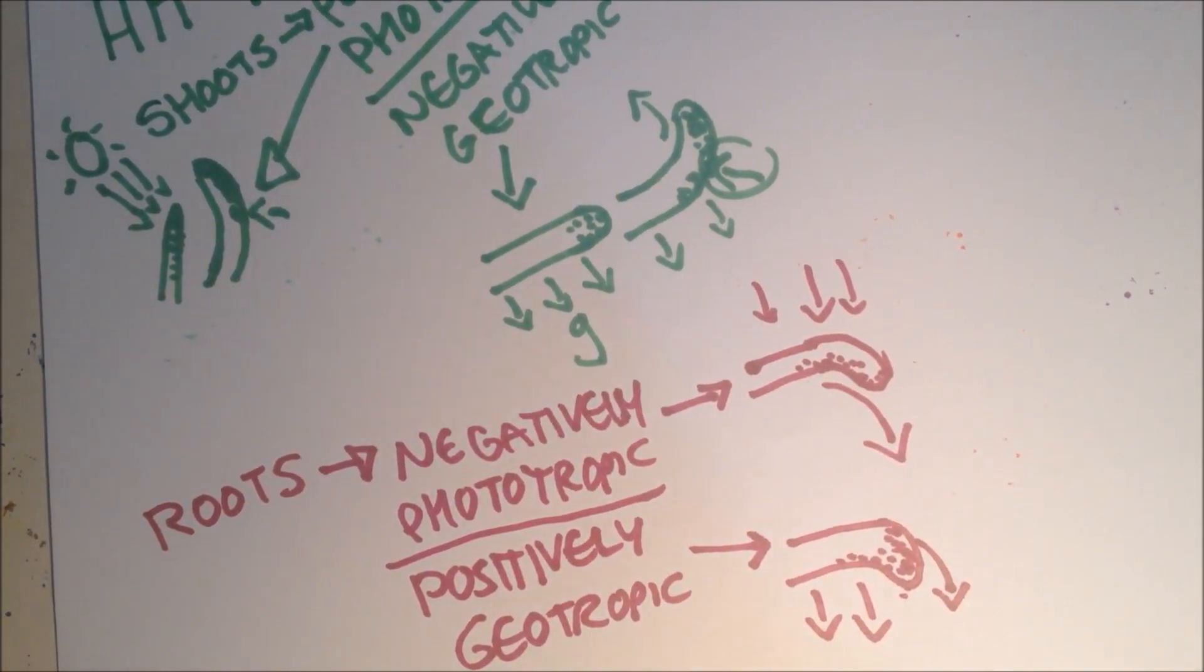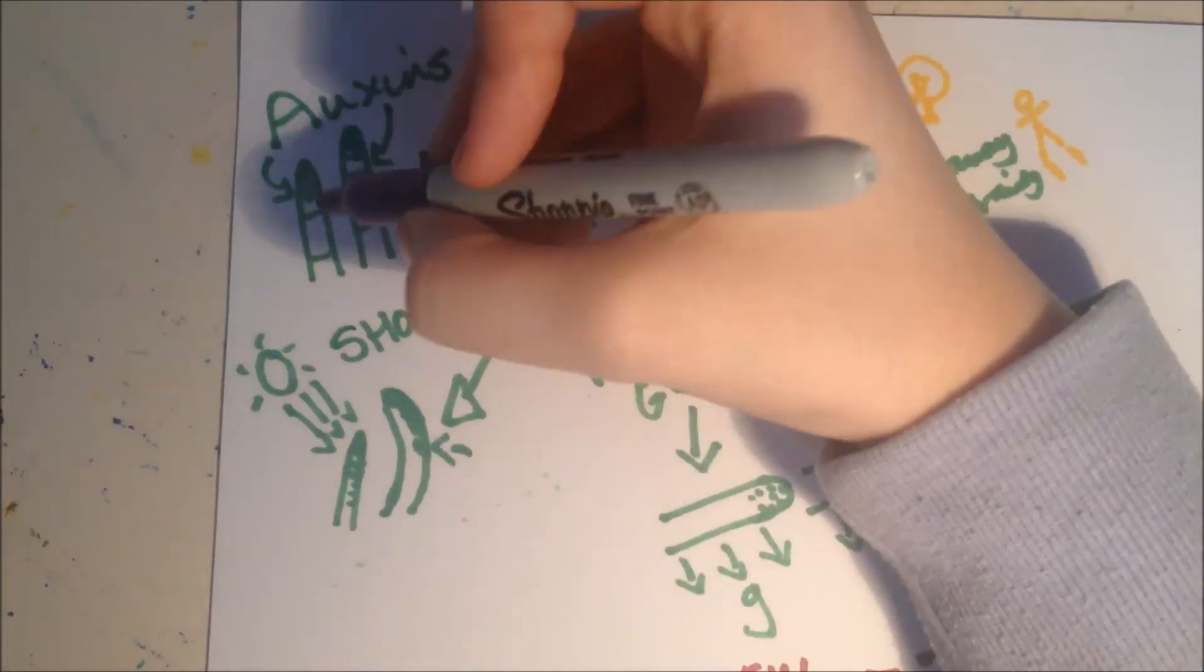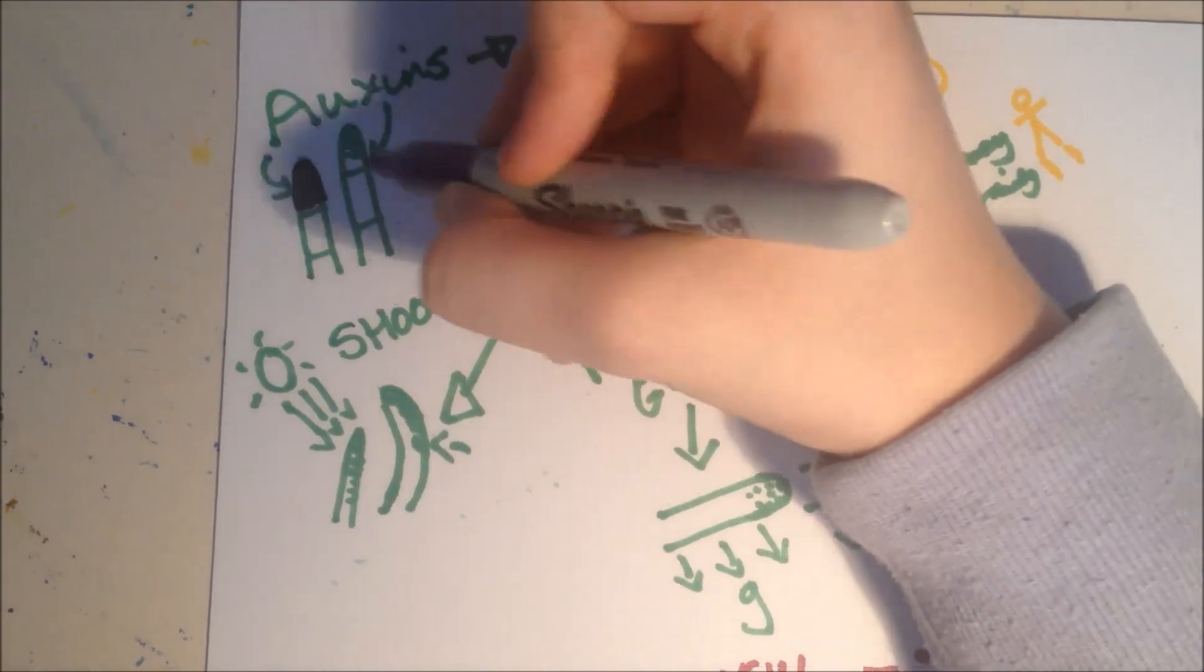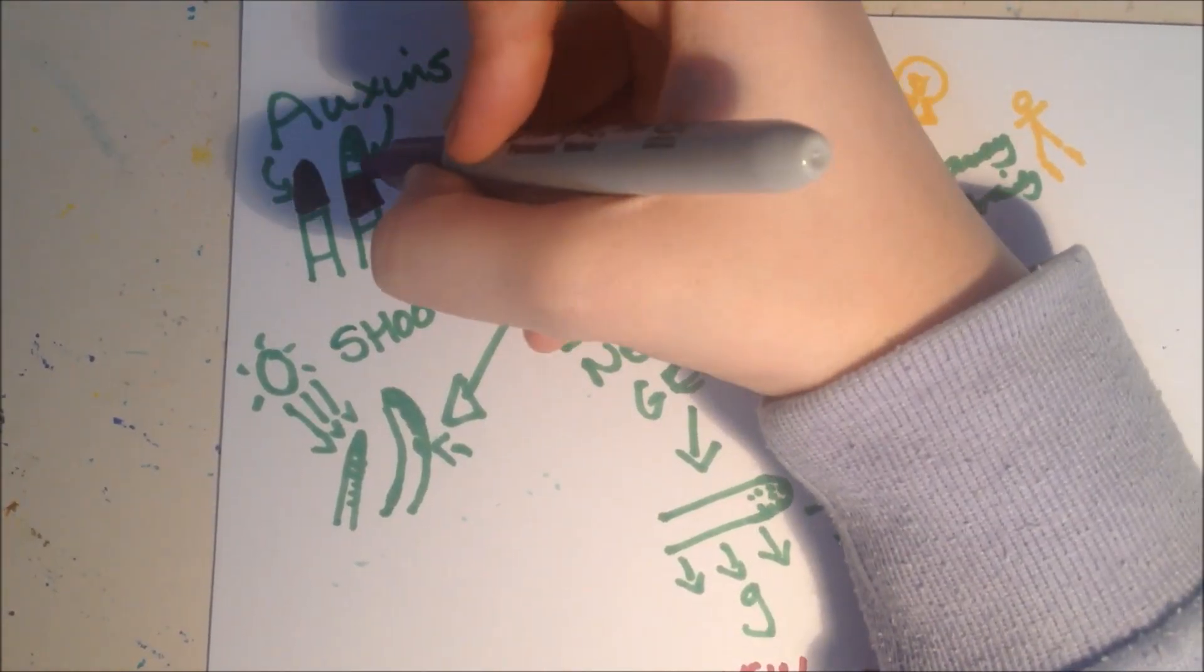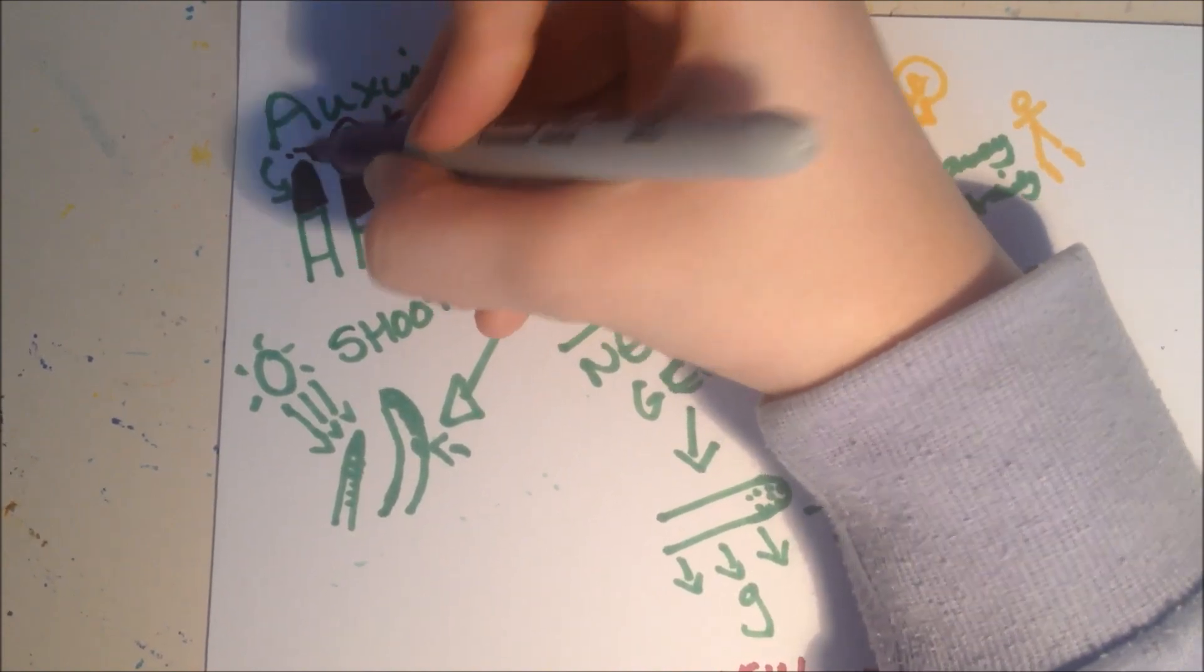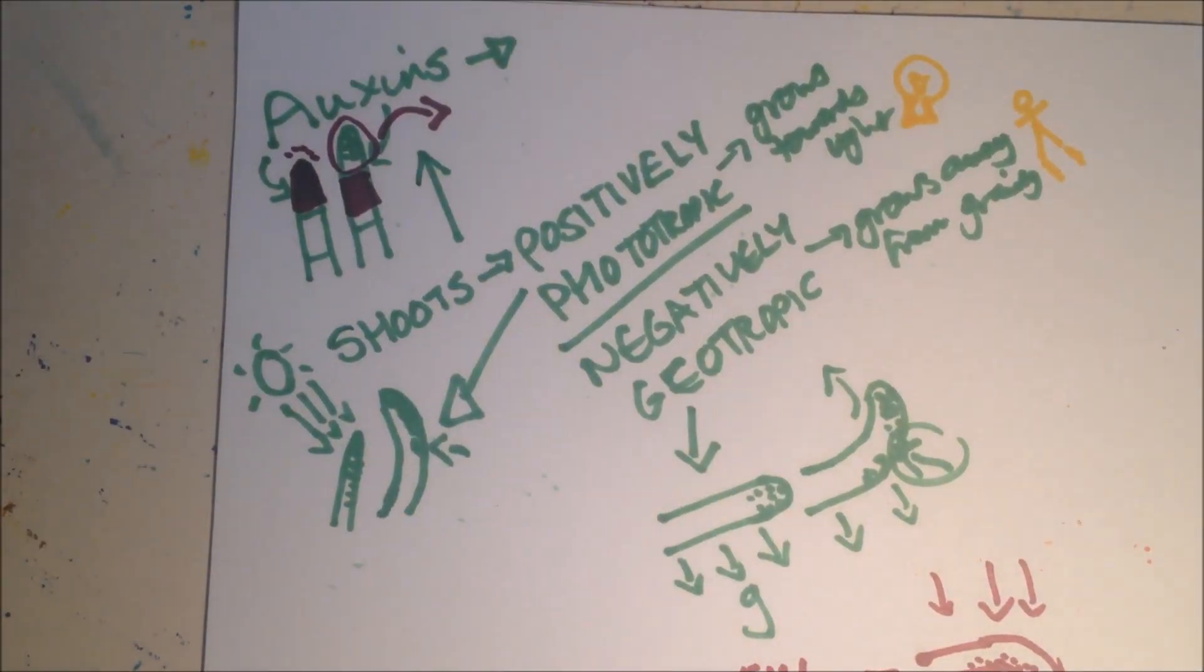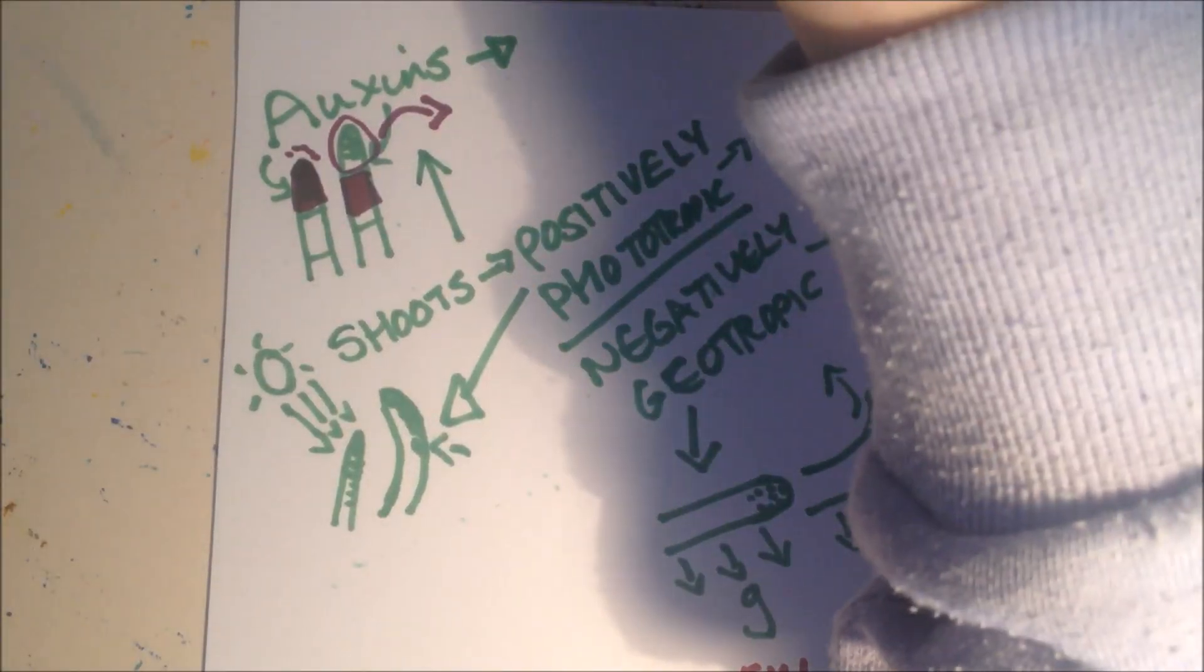There's been lots of experiments to show how auxins work. You can cover the top and the middle. This one with the auxins open would bend this way, but this one wouldn't because the auxins are only produced at the top.